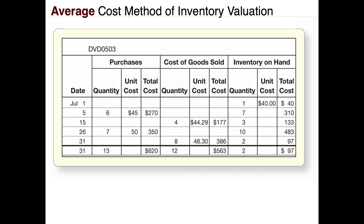On July 1st we had beginning inventory of one item that cost us $40, so the average cost of that one item would be $40. On July 5th we purchased six more items — costs are rising — at $45 each for a total cost of $270. So now on July 5th our ending inventory has seven items: one from beginning and six from the purchase, costing a total of $310 — that's $40 for the one item and $270 for the six purchased.